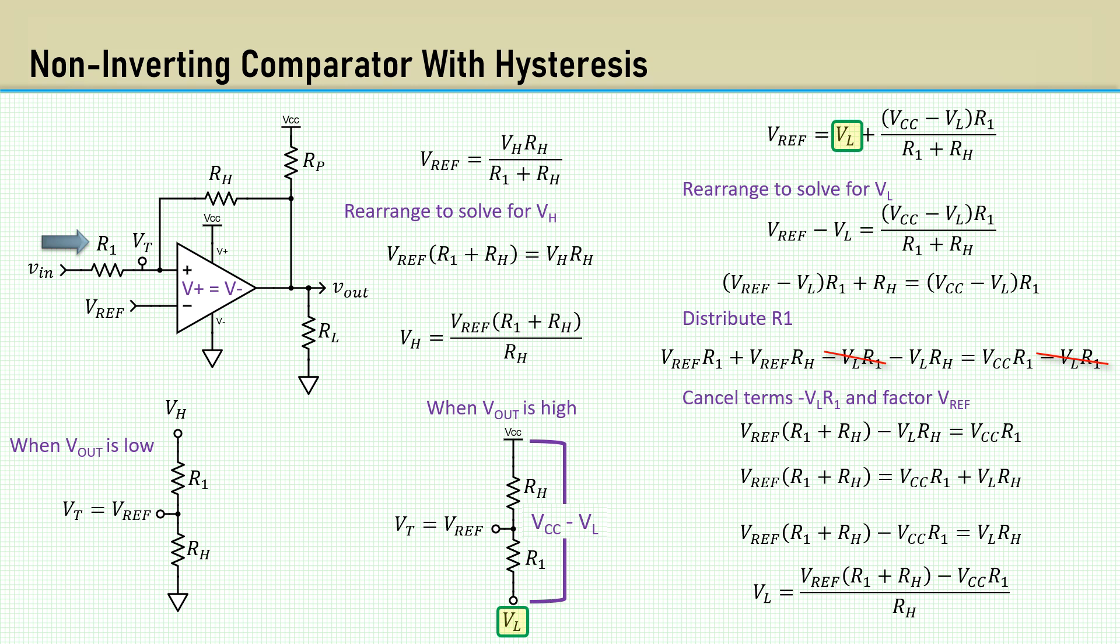As in the inverting example, we had to determine the state when the voltage across RH is minimum. We will do the same here. When the output is low, the voltage across RH is Vref. When the output is high, the voltage across RH is VCC minus Vref.